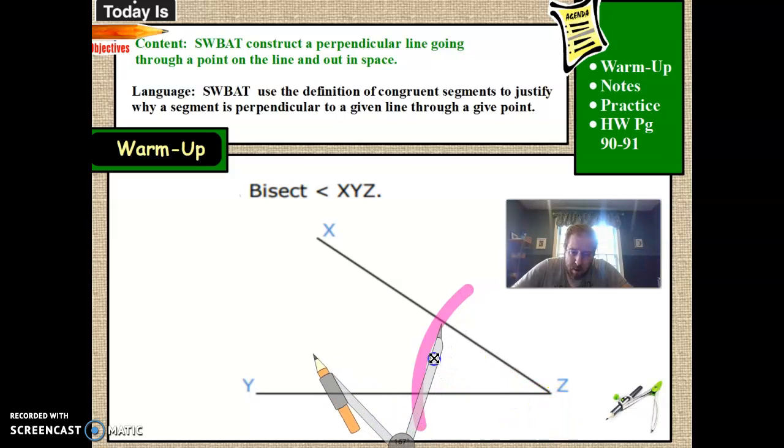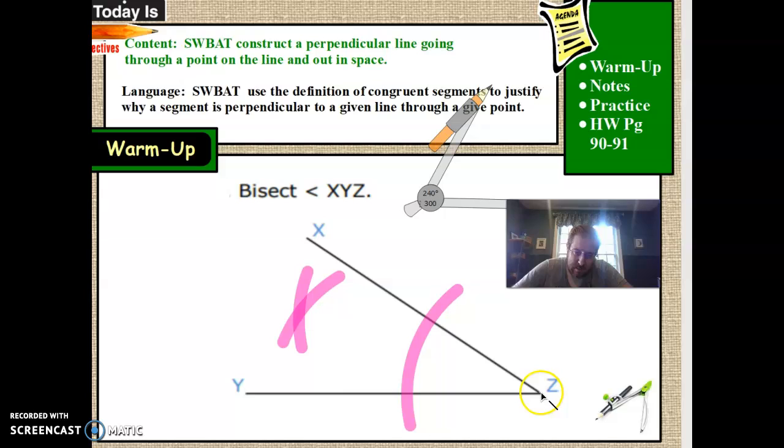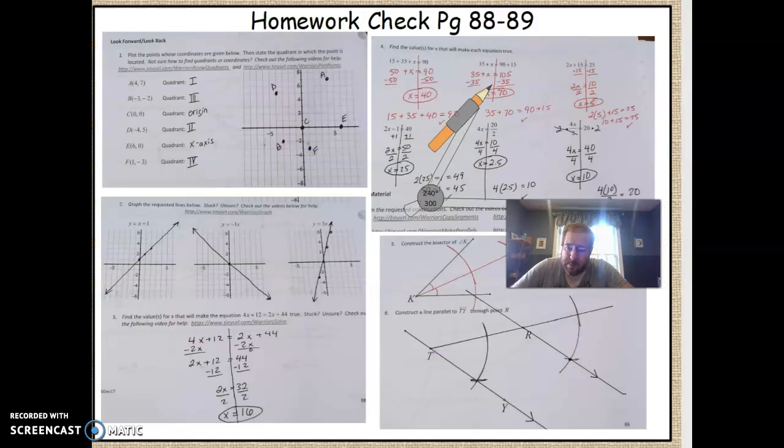I know I've showed this before. We make an arc using our fixed point at Z. Then using that point of intersection right here, I'm going to make an arc out here in the middle of space, do the exact same thing from the other side. Wherever those two intersect is going to be equal distance of both rays, and that's what I use to connect to the starting point. So that's essentially the steps.